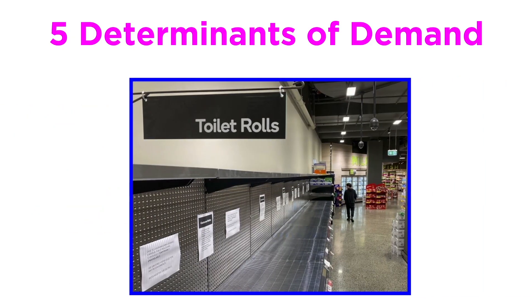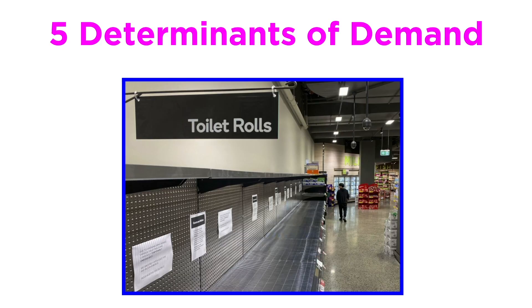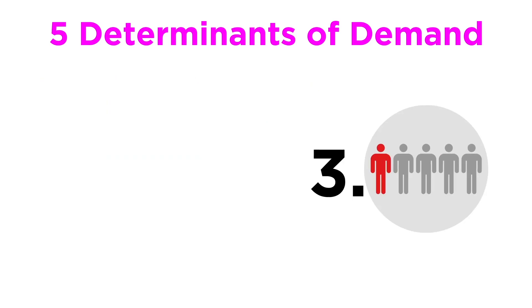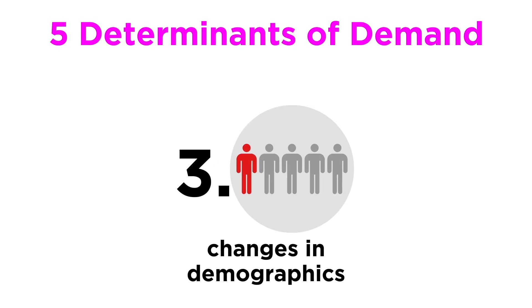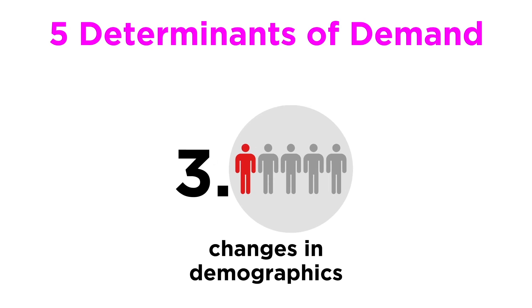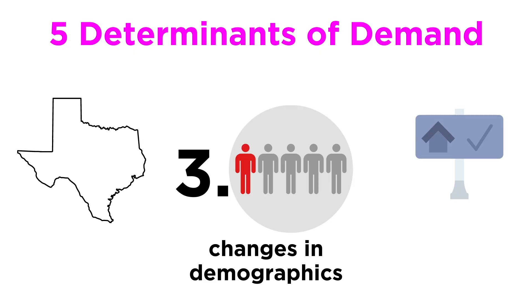For example, an expectation that there will be a shortage in a particular product may influence consumers to buy more of it now. Number three: changes in demographics and population size can also affect demand. For example, if a real estate developer wants to invest in Texas, they have to look at the growing Hispanic American population there to have a better prediction of what demand will specifically look like.